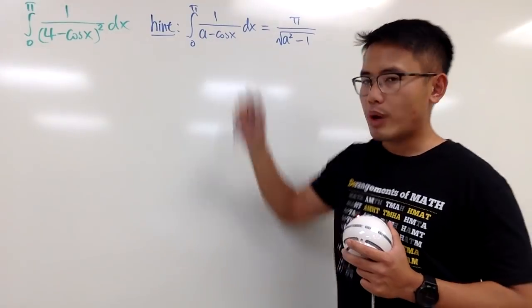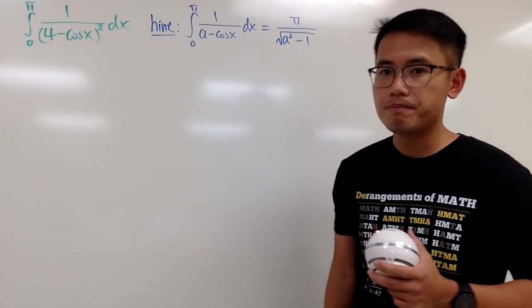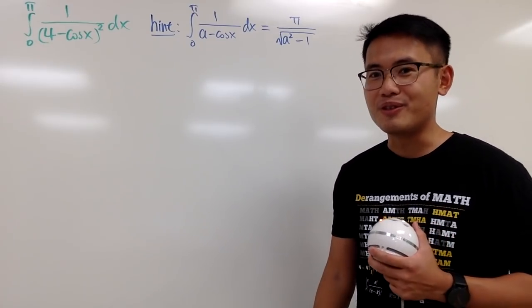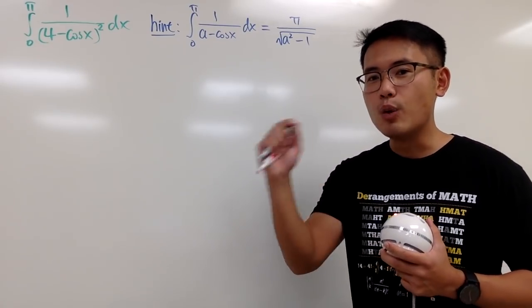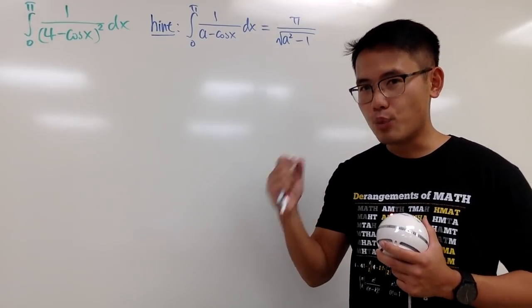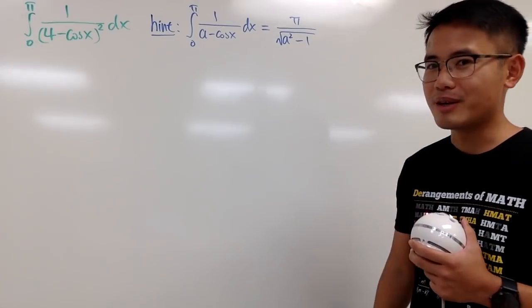When we have this right here, how can I produce the denominator to become the square? Well, if you think calculus, how about let's talk about differentiation? Because if you differentiate 1 over x, you get negative 1 over x squared, isn't it? So, that's how we are going to approach it.